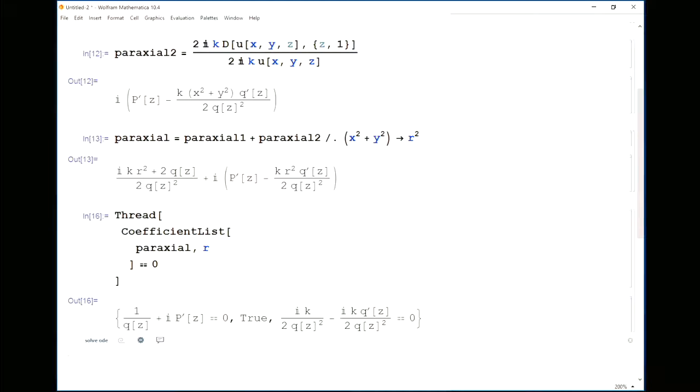And Mathematica simplified that to true because it is. And the final one is the quadratic coefficient of r equaling 0. So this is pretty much the entire job done, although it isn't in the form that we derived the other day, nor is it in the form of the lecture notes.